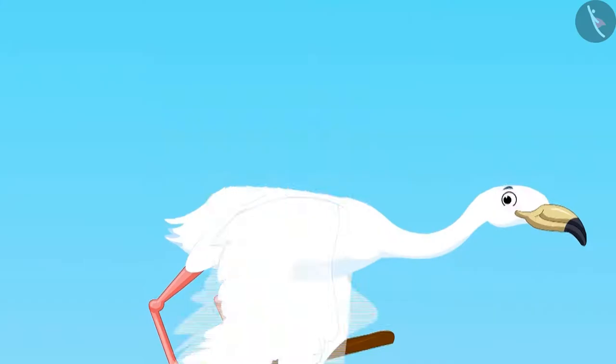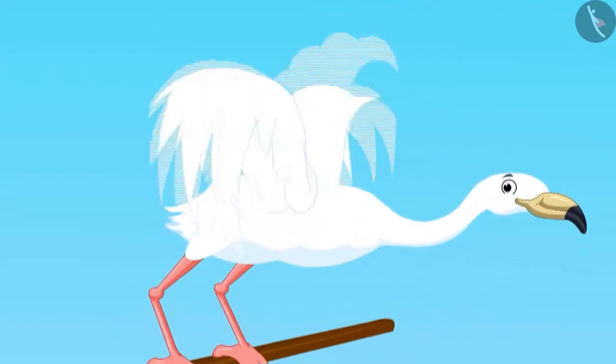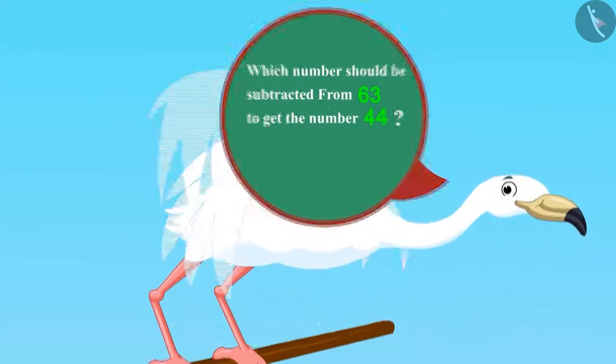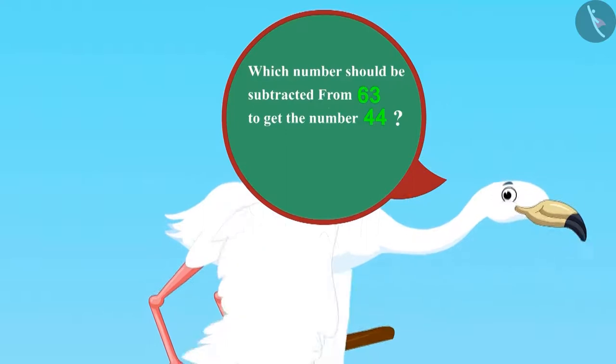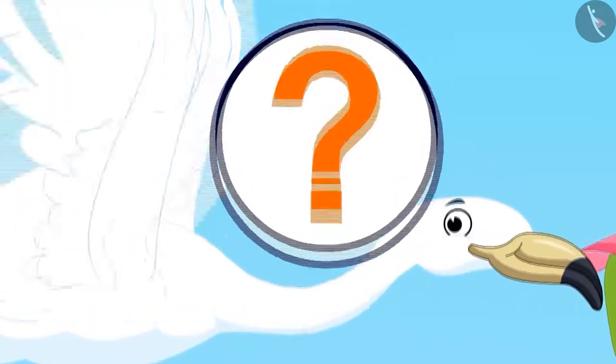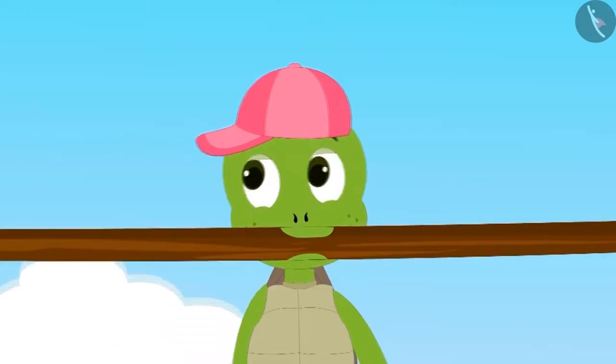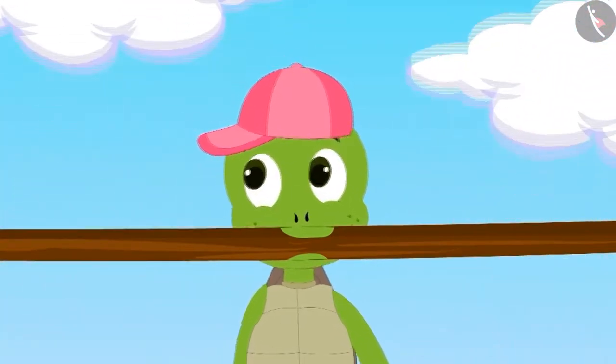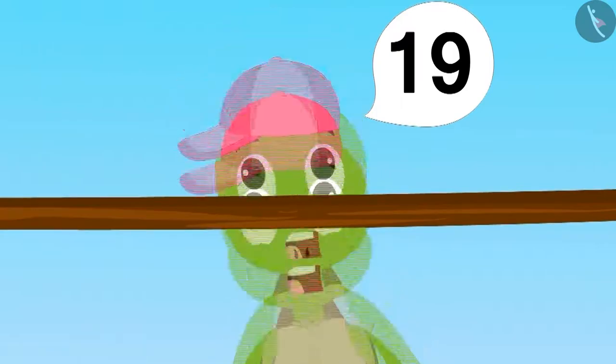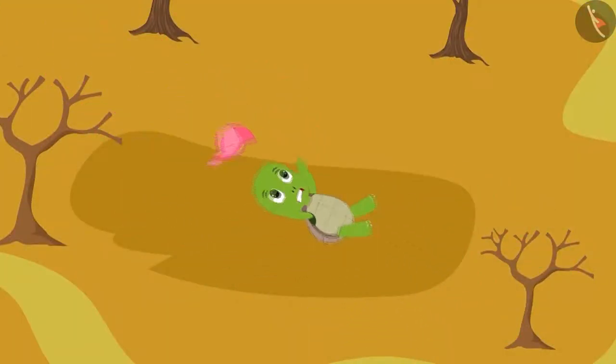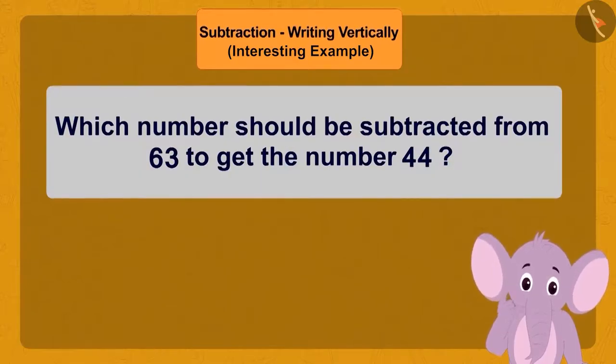Now the first bird asked one last puzzle. What is the number I have to subtract from 63 to get 44? The second bird was unable to find the answer to this puzzle. Upon seeing this, Tufan thought that he could show the birds that he is more intelligent than them. He immediately said 19. As soon as Tufan opened his mouth to answer, the poor fellow fell straight down from the sky.